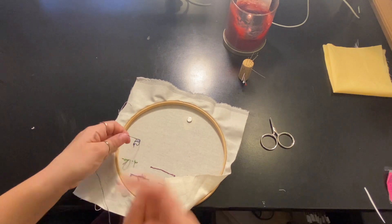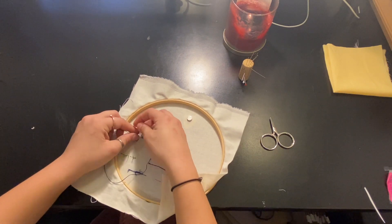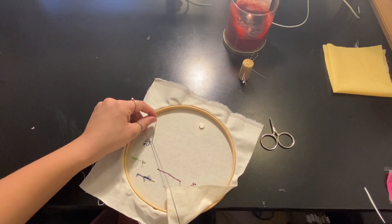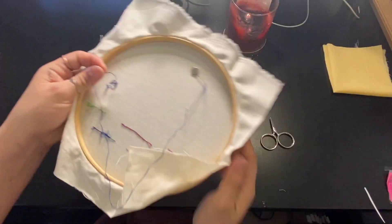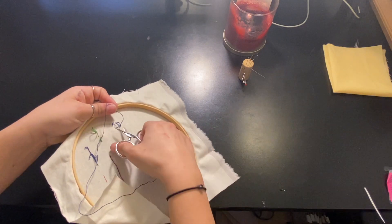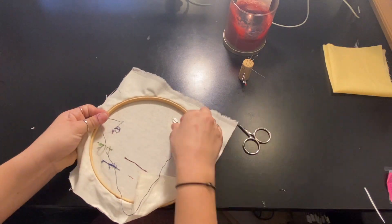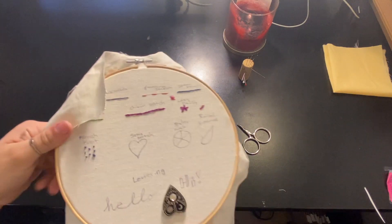Then we're going to create one more French knot just so we can save our thread for later. And there you have it, she's all done. We're gonna snip it and now we have all of these little French knots.